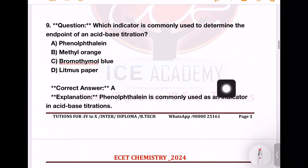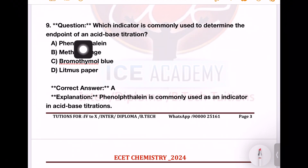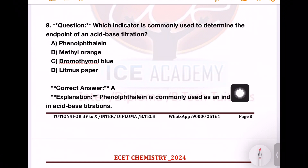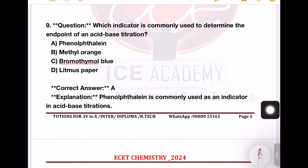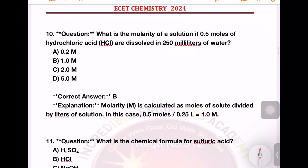Next question: which indicator is commonly used to determine the end point of an acid-base titration? Options: phenolphthalein, methyl orange, bromothymol blue, litmus paper. The right answer is phenolphthalein — option number A is the right answer.